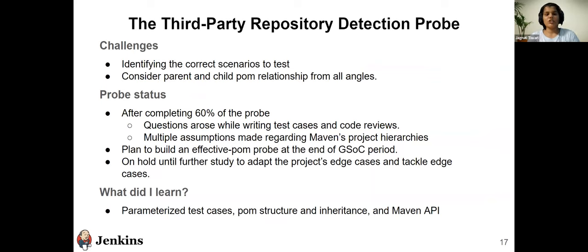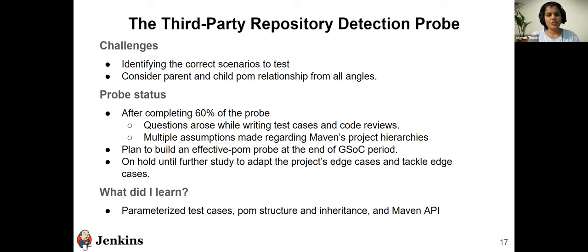One of the biggest challenges with this probe was identifying all the different parent and child Maven project relationships along with test scenarios. This probe is about 60% complete. During the review and test-writing process, we found many assumptions made about Maven project hierarchy and many edge cases we had missed. Until we tackle those edge cases, we decided to put this probe on hold. Our solution is to write an effective POM file service that will resolve the effective POM using different Maven hierarchies. I also learned parameterized test cases and studied Maven's original documentation.